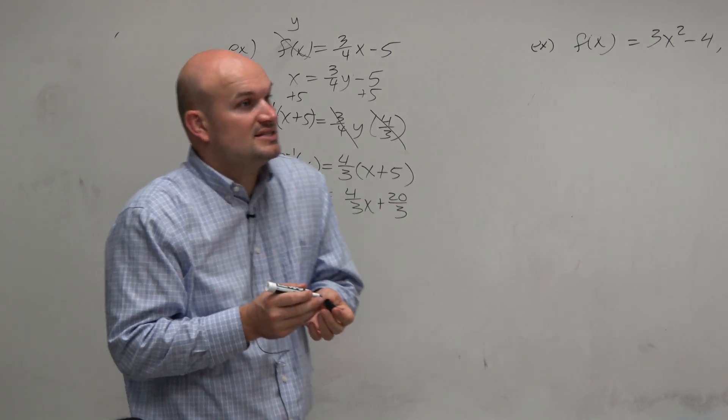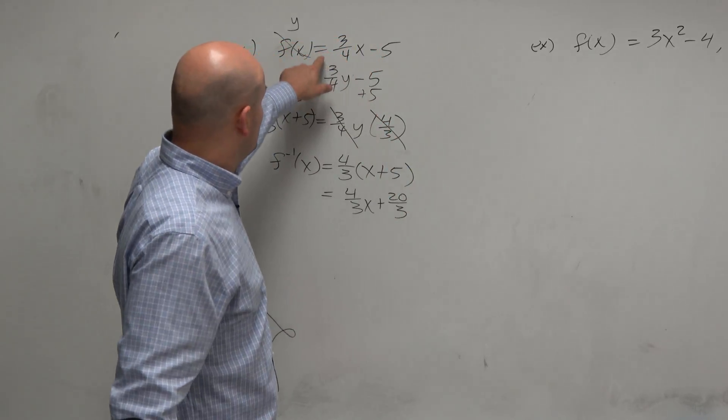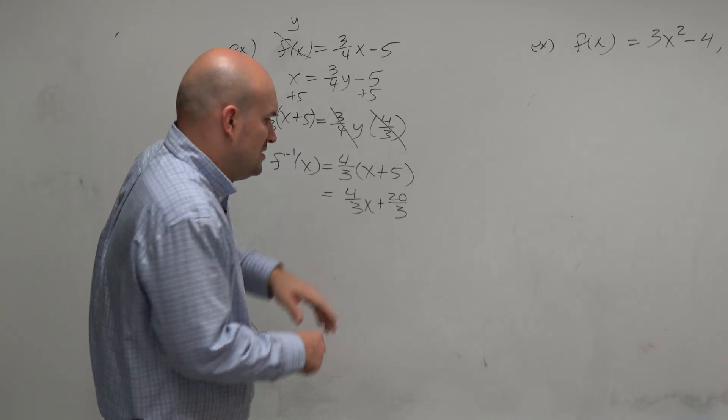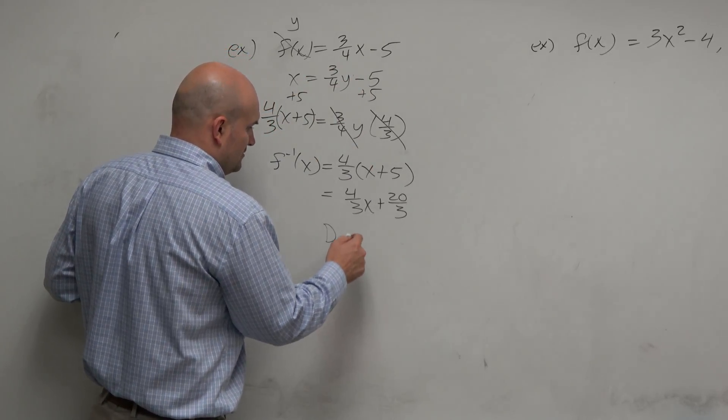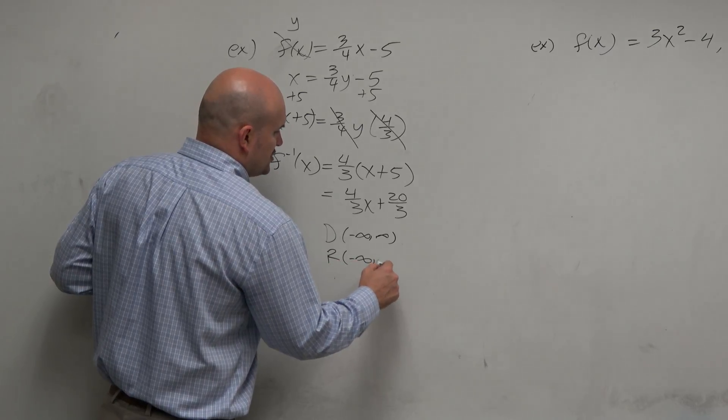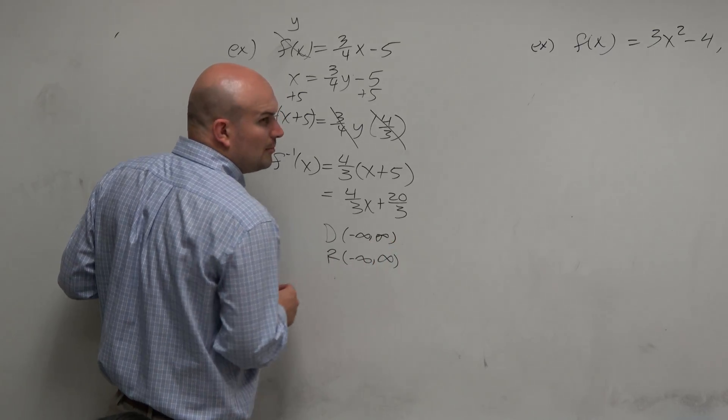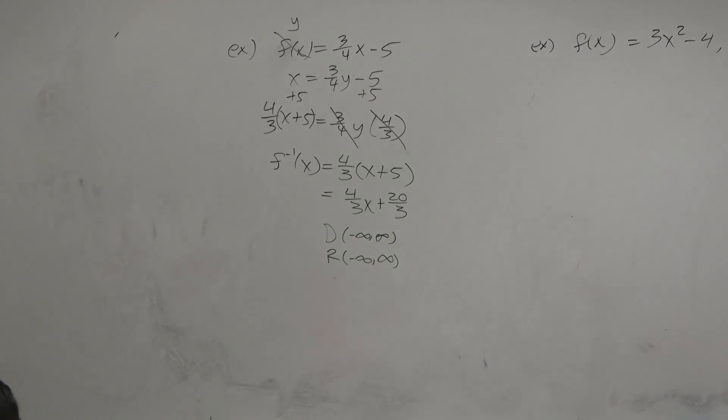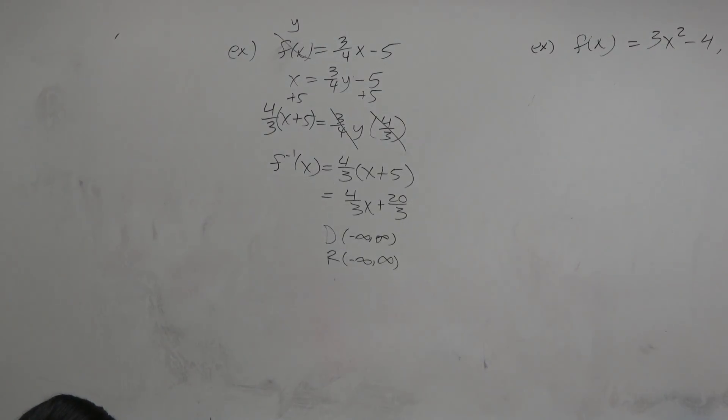Now the important thing is let's talk about the domain and range. This is a line. What do we know about the domain and range of a line? All real numbers for everything. Domain: all real numbers. Range: all real numbers. So we don't really need to know the inverse to help us out with that. The inverse is not really helpful there.